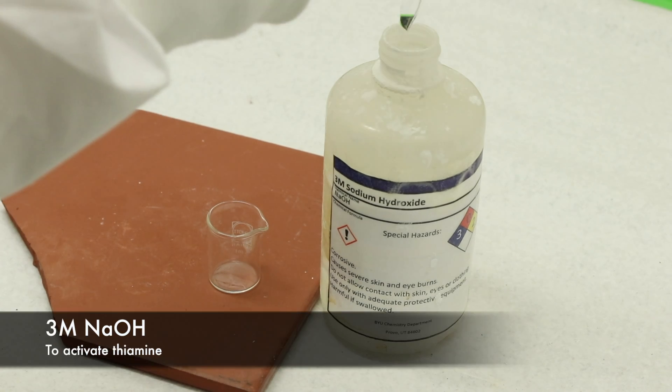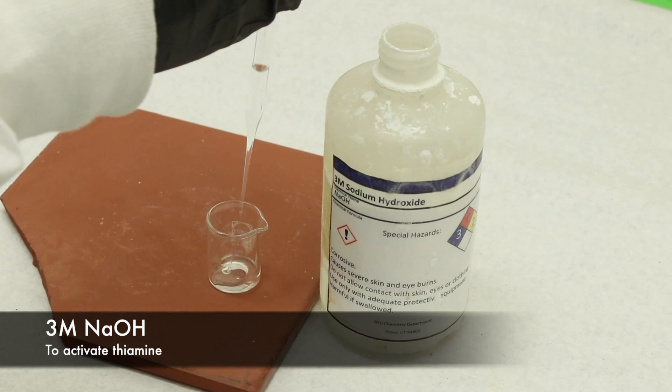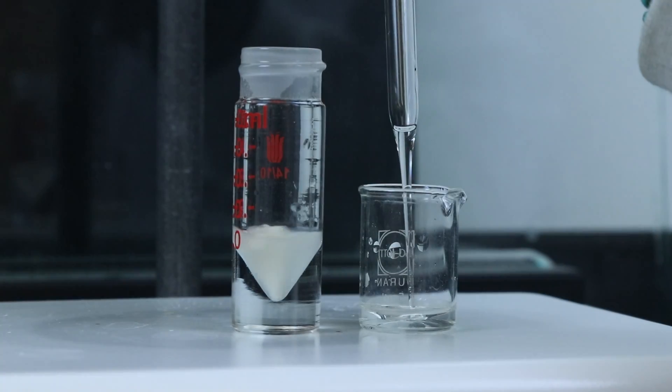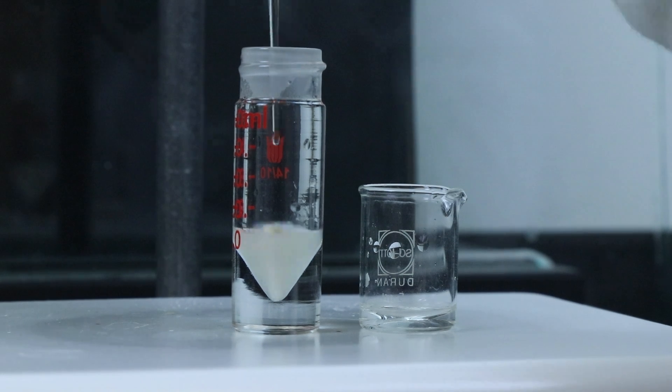Then I'll get some 3 molar sodium hydroxide which will be used to activate the thiamine and I'll be adding that dropwise just until the solution turns and remains a bright yellow color.